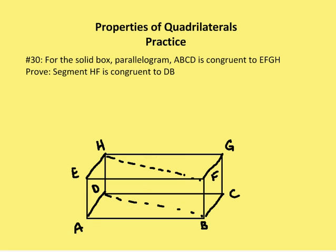Last problem for the solid box parallelogram ABCD. Parallelogram ABCD is congruent to EFGH. And I'm going to prove that segment HF is congruent to DB. So here I want to prove that HF is going to be congruent to DB. It's actually a pretty simple problem. We know that because I have two parallelograms that are congruent to each other, they're four-sided figures. I know all the corresponding sides and angles are going to be congruent. So I have HG congruent to DC. I have GF congruent to CB. And I have angle HGF congruent to angle DCB. So by side angle side, you can see that I have two triangles, HGF and DCB that are congruent. And then by CPCTC, HF will be congruent to DB. So let's go through the proof.